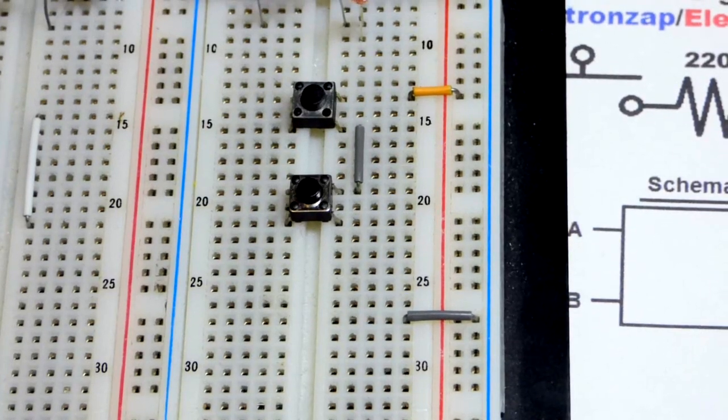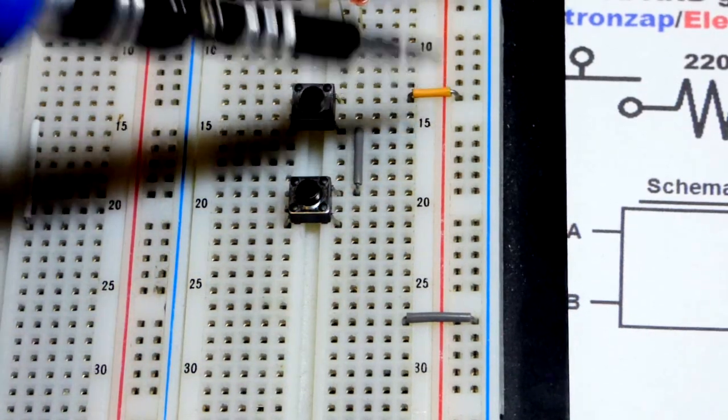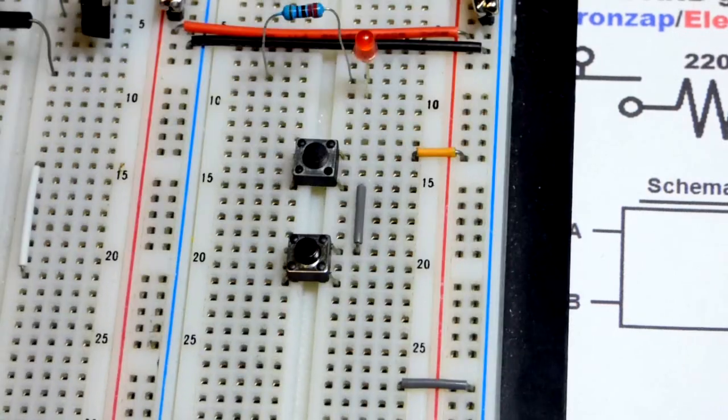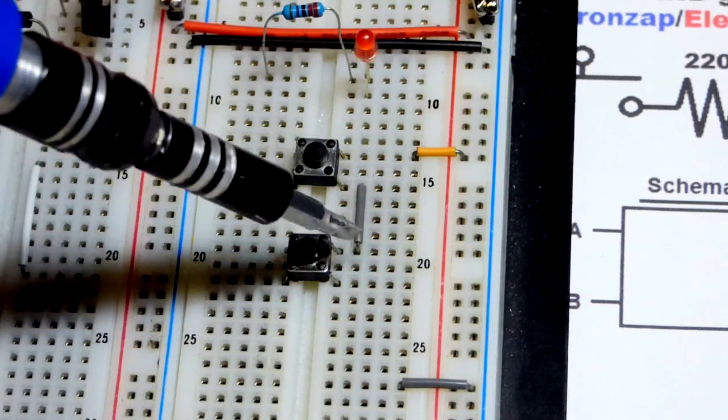And so, we'll look at the breadboard build really quick. We have the switch right there, top of it, to the positive supply. And the bottom of the switch comes to the top of the other switch via this jumper there.